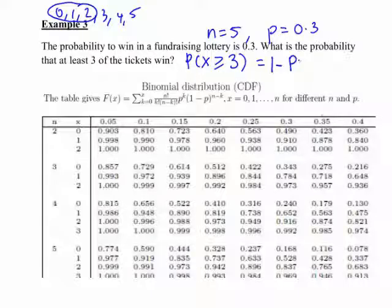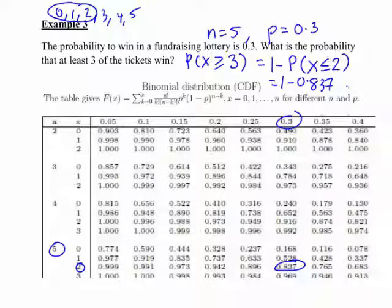So that can actually be calculated as 1 minus the probability of X less than or equal to 2. From our previous example, we saw that the probability of X less than or equal to 2 was 0.837. Therefore, the probability of at least 3 tickets winning will be 1 minus 0.837, which works out to be 0.163. So these are some examples of calculating probabilities in the binomial distribution using statistical tables.